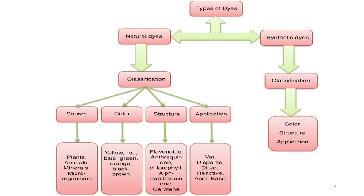When we talk about classification under color content, it can be yellow dye, red dye, blue dye, green dye, orange dye, black dye and brown dye. So we are talking about the color, and the classification can also be based on the color.